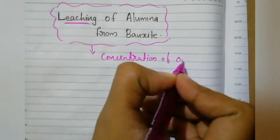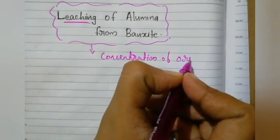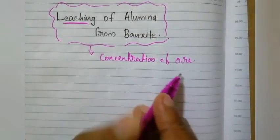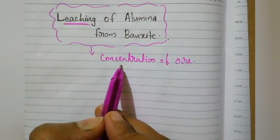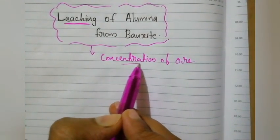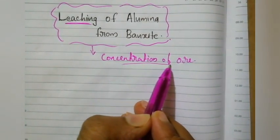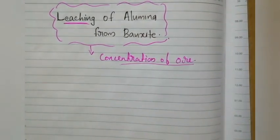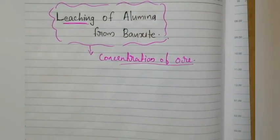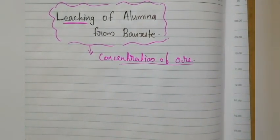The speciality of leaching compared to other methods is that leaching is a chemical method of concentration of the ore. Other methods were simply physical methods, but leaching is considered a chemical method.